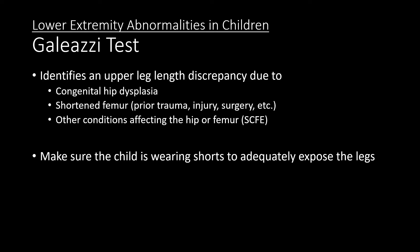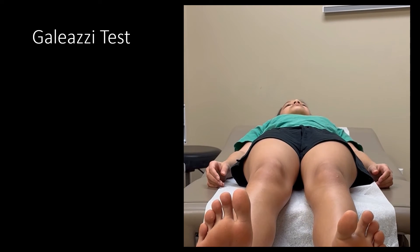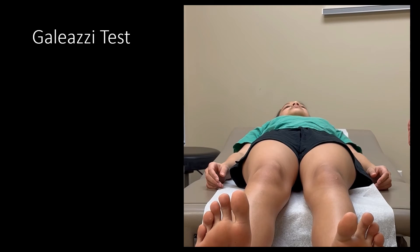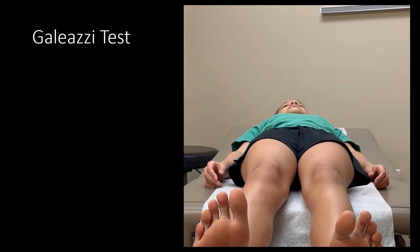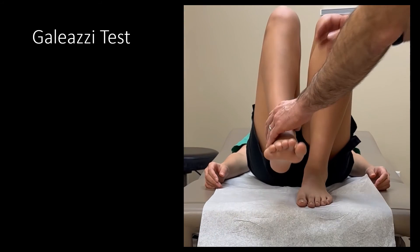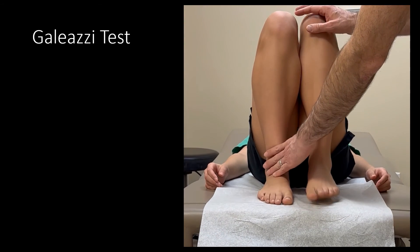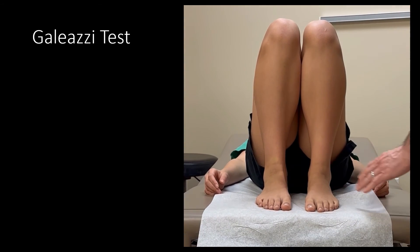Make sure the child is wearing shorts in order to adequately expose the legs for examination. The Galeazzi test, sometimes called the Allis sign, is assessed by having the patient lie supine with knees flexed so that the feet are flat on the surface of the table and the heels touch the buttocks.